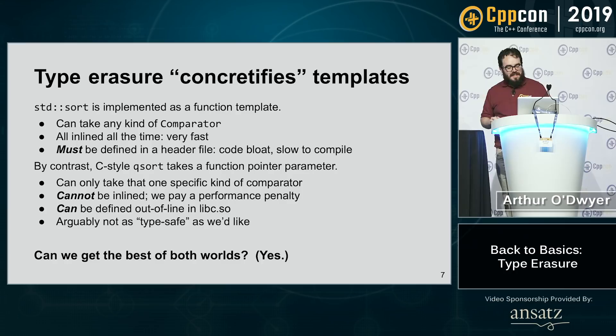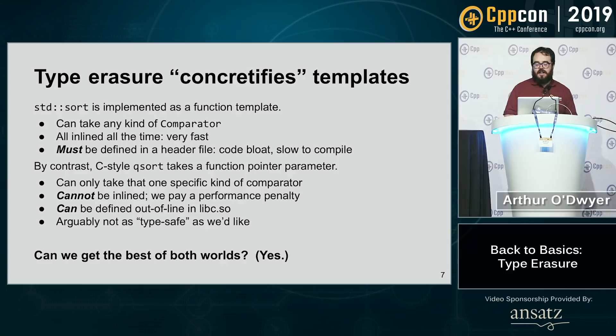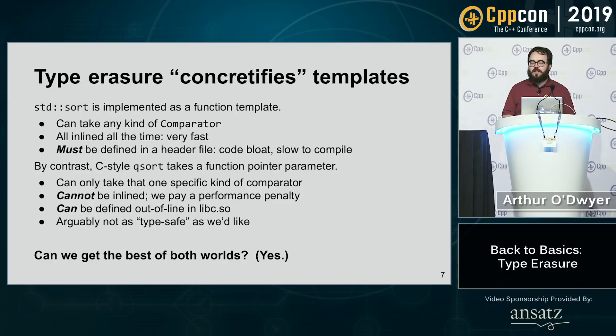By contrast, the C standard library provided qsort — a concrete function. Qsort is defined in libc and can only take one specific function signature with a lot of void pointers. It can't be inlined, so we pay a performance penalty, but the upside is we don't have to compile it every time. A downside is that it's arguably not as type safe because of all those void pointers. We're trying to get the best of both worlds: type safe enough for C++, definable out of line, without template bloat.